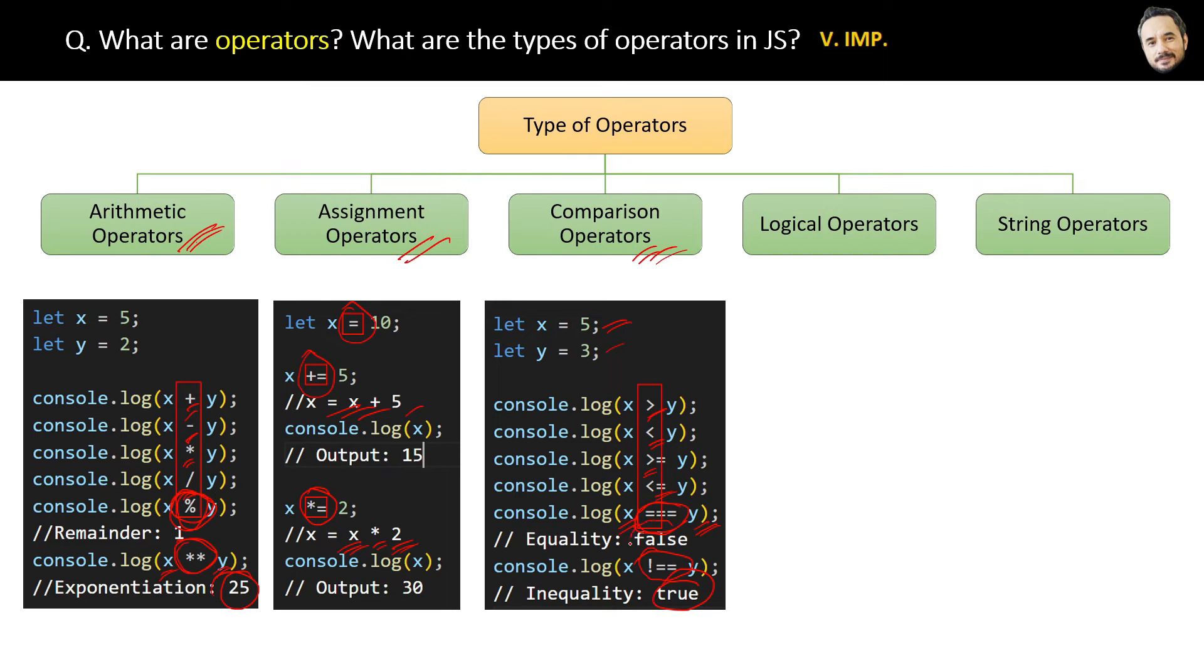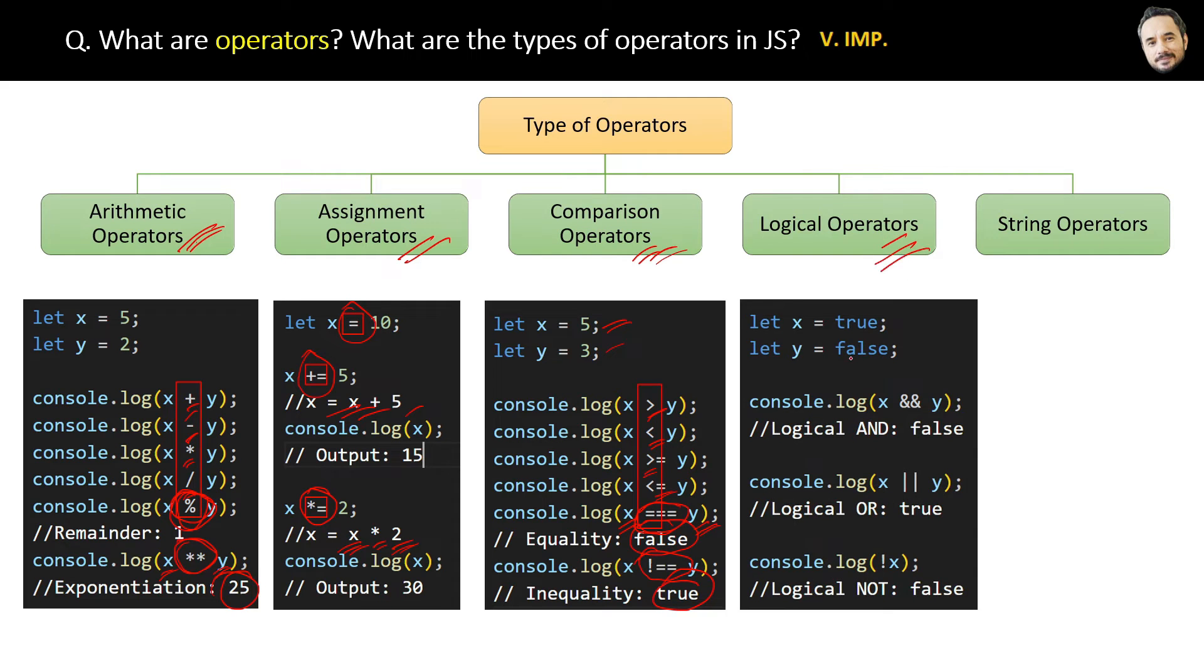The next category of operators are logical operators. Here is the code. The first logical operator is the AND operator. It will check if both the left and the right condition of the operator are true or not. If both are true, then only it will return true. But if any one of them is false, left or right, then this will return false. In this case, x is true but y is false, so it will return false.